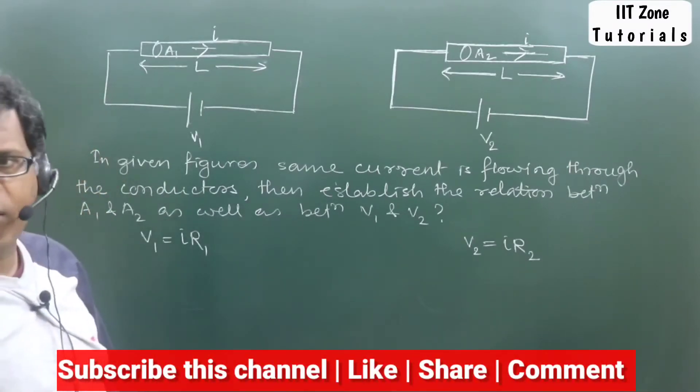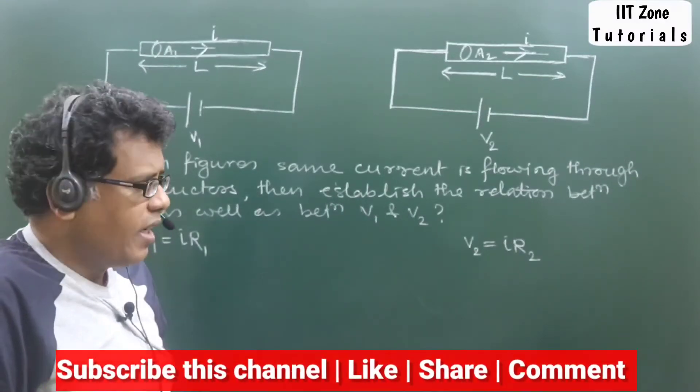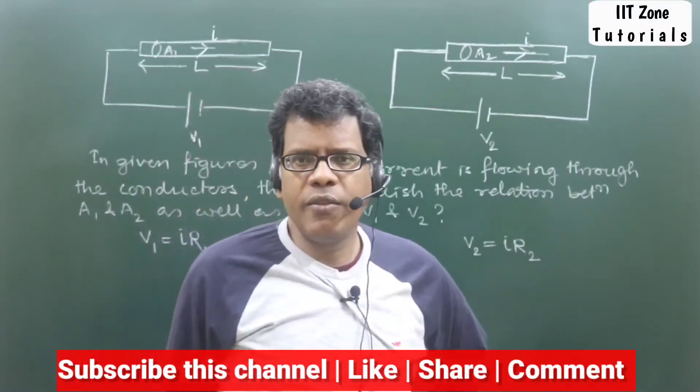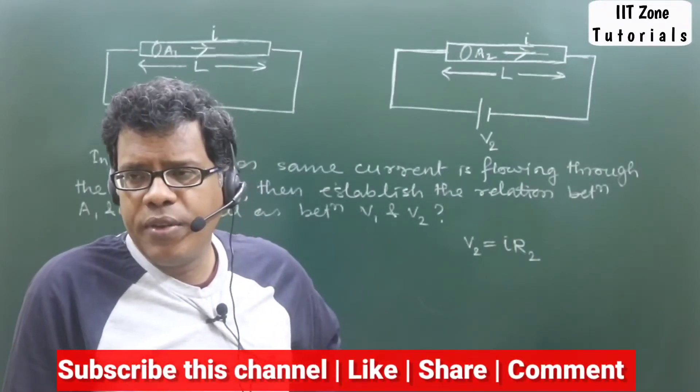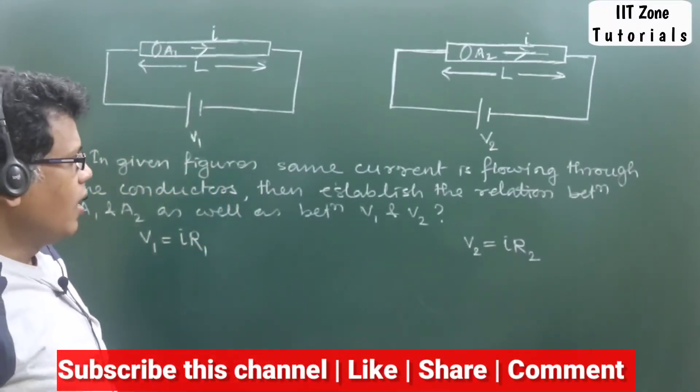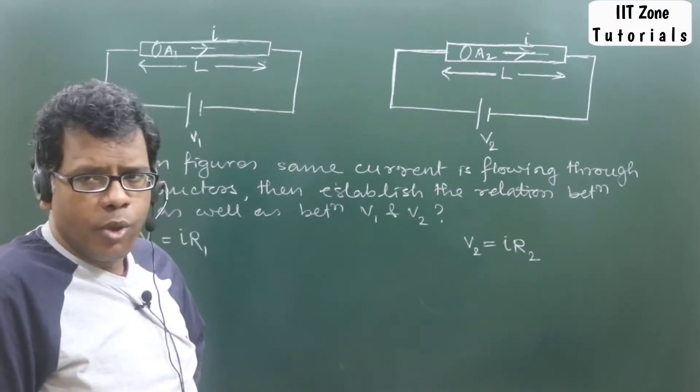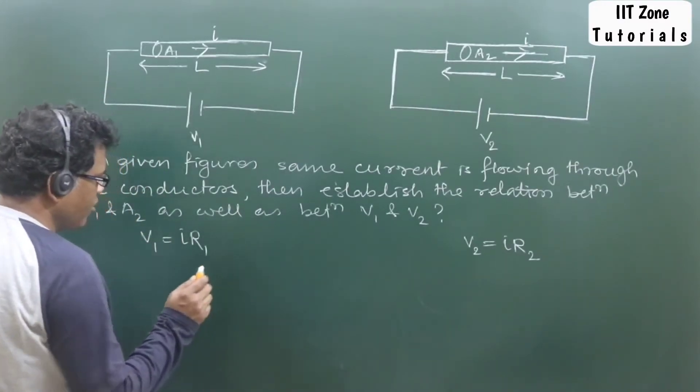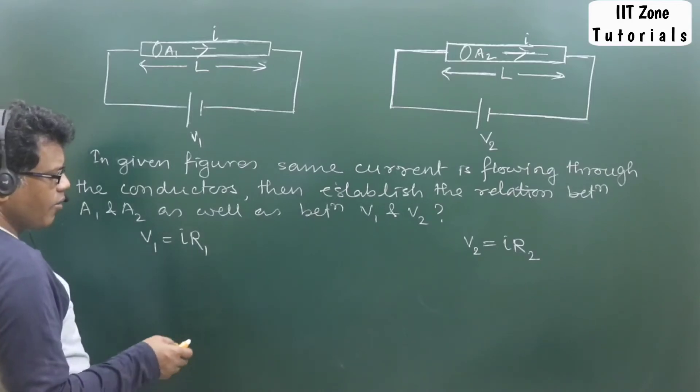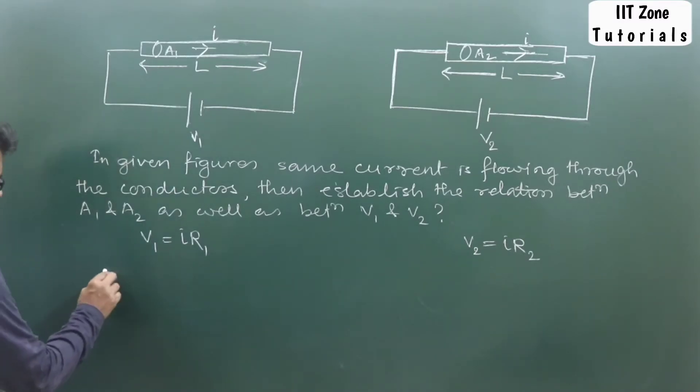We can write down the potential difference because, see, when the current flows through the conductor, then across the ends of the conductor the potential difference raised is equal to the potential difference of the applied source. Right? The potential difference raised in the conductor for carrying current I will be equal to the potential difference across its terminal ends. So V1 is equal to IR1 and V2 is equal to IR2.